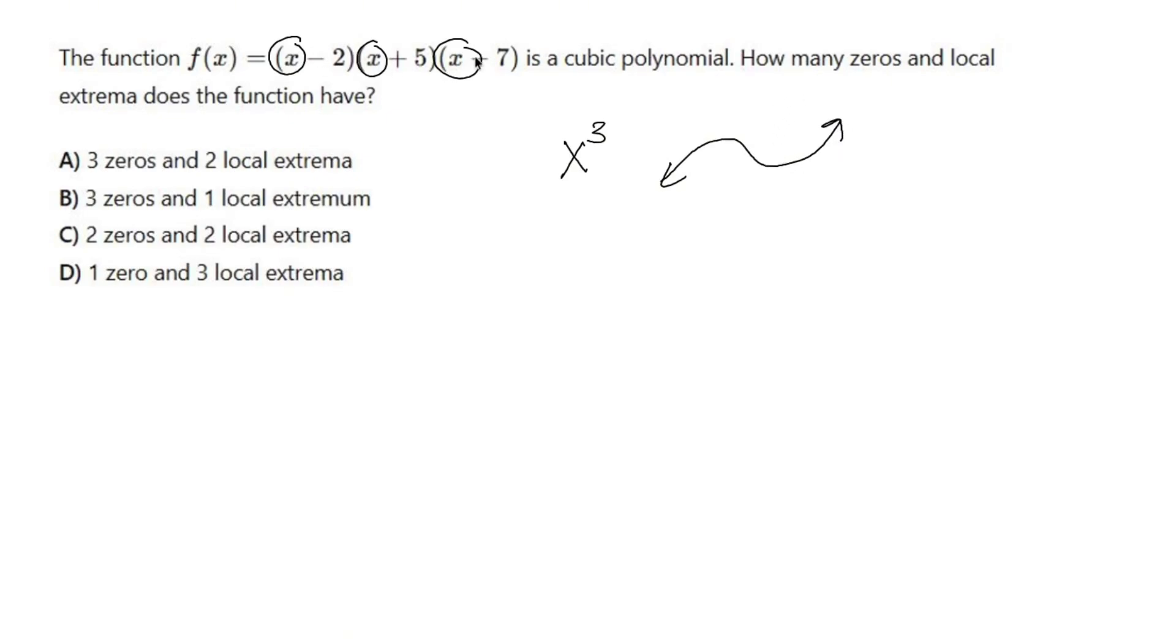Now, these go through three separate zeros, no multiplicity. So you go through 2, you go through negative 5, you go through 7.